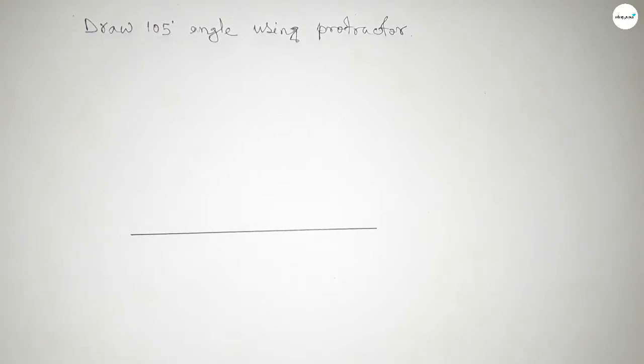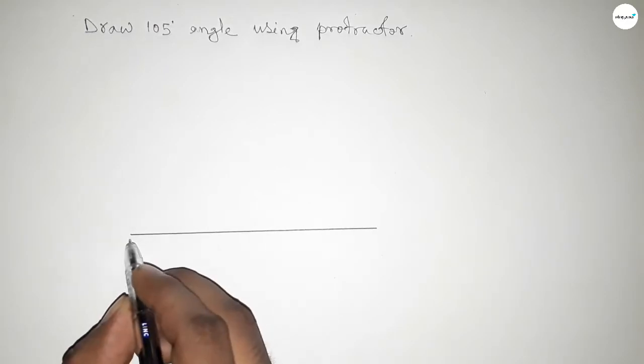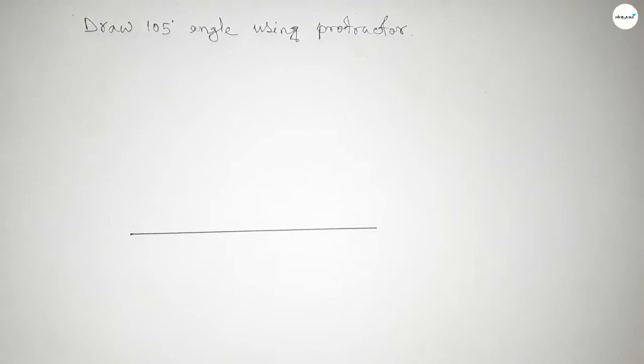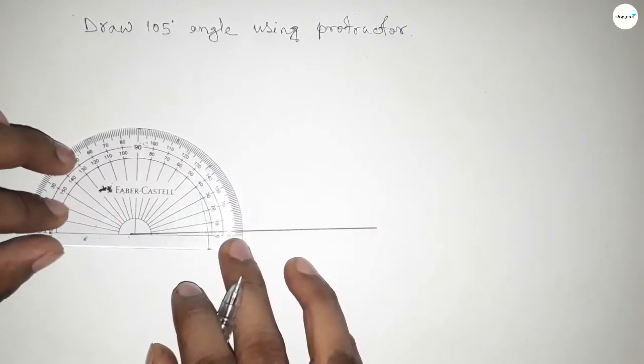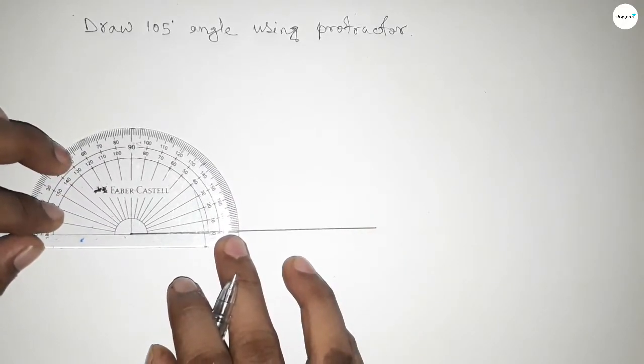Next, pointing out here to draw 105 degree angle. Now putting the protractor on the point or on the line perfectly.